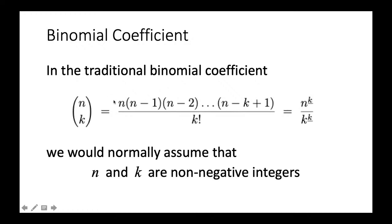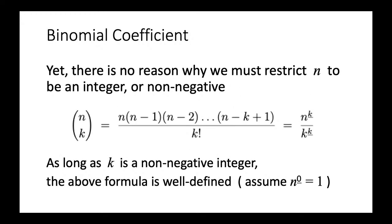When talking about binomial coefficients, we normally assume n and k are both non-negative integers. But there is actually no reason why we must restrict n to be an integer or non-negative in this particular formula. So n could be a real number — we can set n to be a real number and it is still well-defined. We start from some real number r, then multiply it with r minus 1, r minus 2, and so on — altogether k terms. As long as k is a non-negative integer, this formula is well-defined, and we assume anything to the power 0 equals 1.